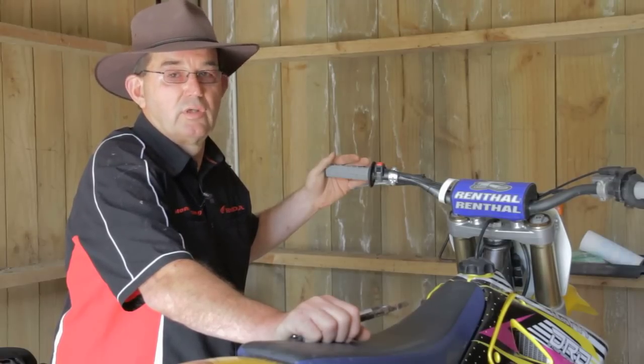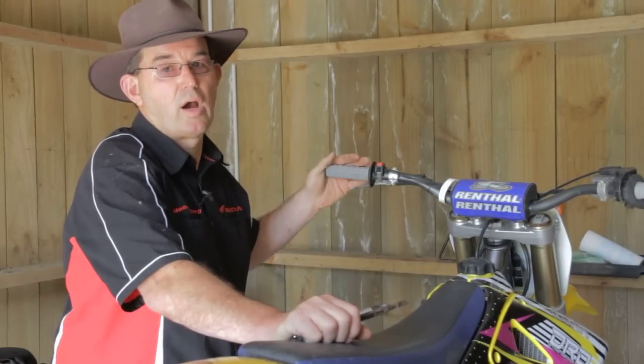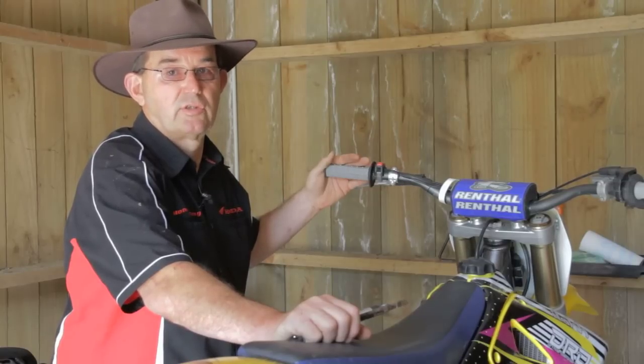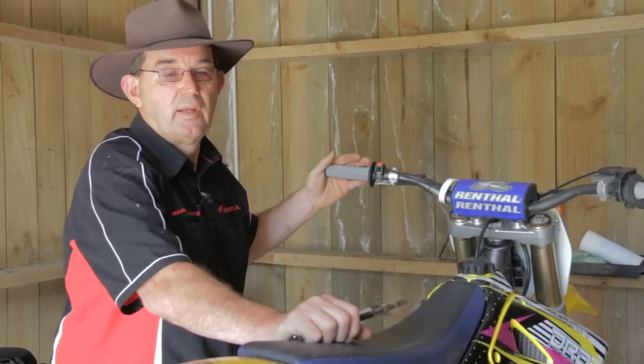So lock wire without glue is pointless, glue without lock wire is pointless. So you use it in a combination to make sure the grips stay tight and don't slip.